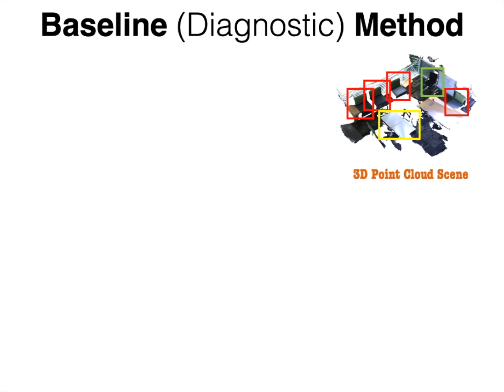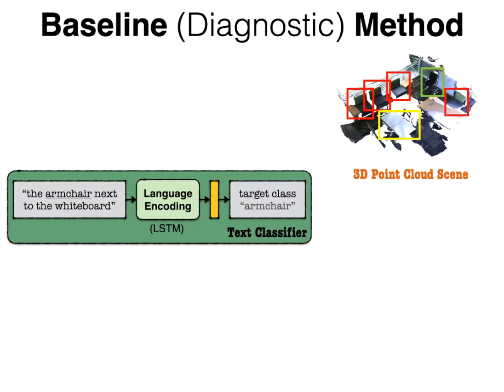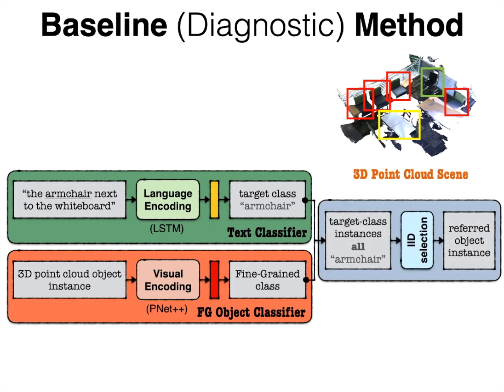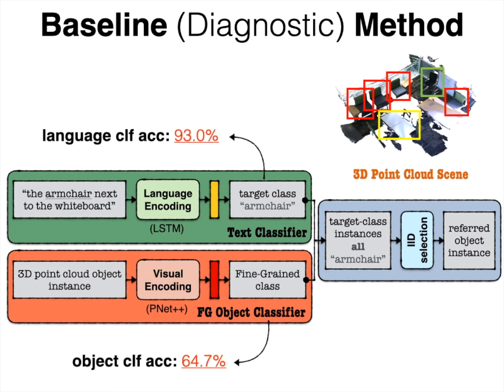Before we describe ReferIt3DNet, we discuss baselines. The simplest one is comprised by a text classifier that predicts for a given utterance the target's object class. At the same time, an object classifier predicts the object class for each 3D point cloud instance in the given scene. We couple the two classifiers by outputting the object for which their predictions agree; when multiple such objects exist, we pick one uniformly at random. An important finding is an asymmetry: referential text classification appears to be much easier than 3D fine-grained object classification.